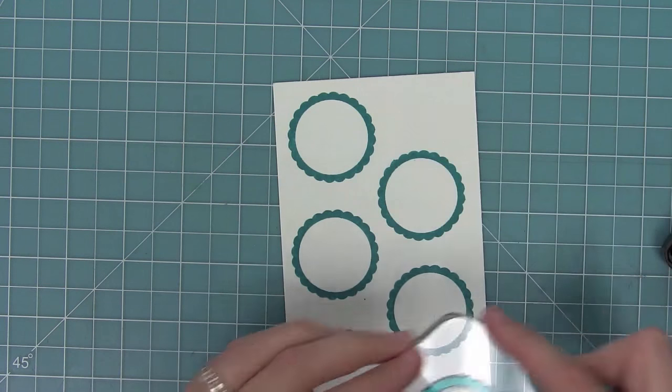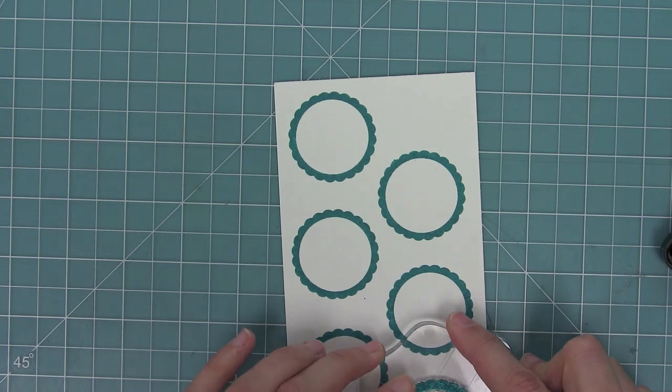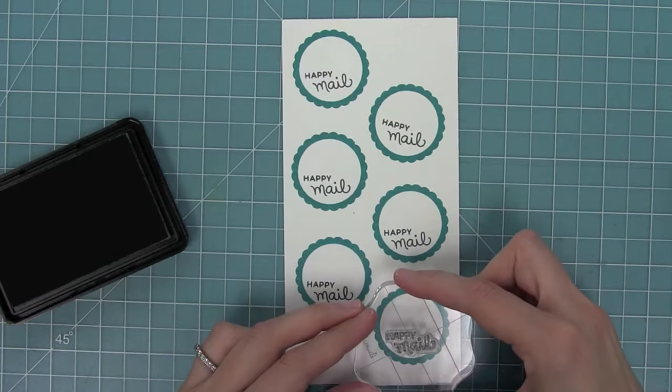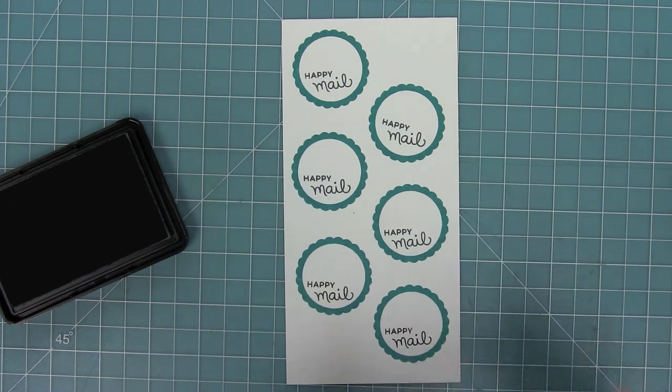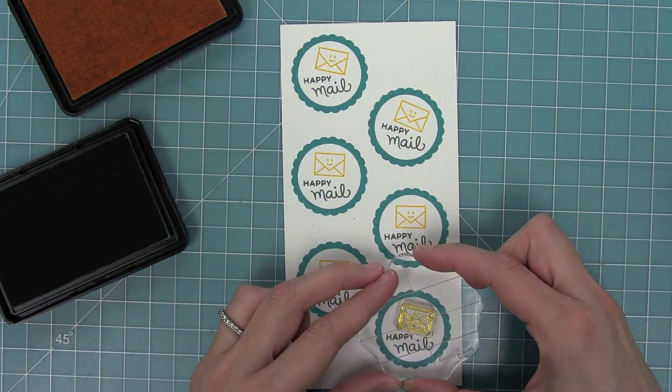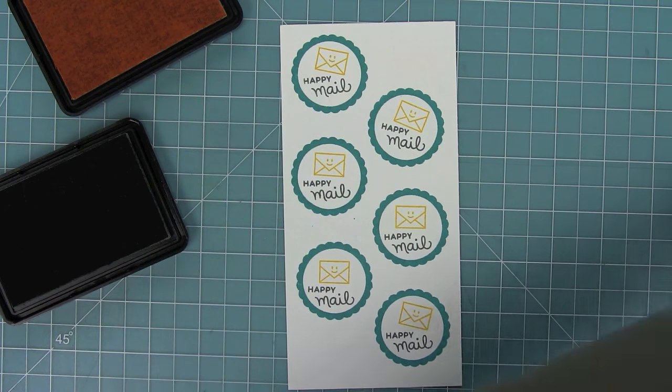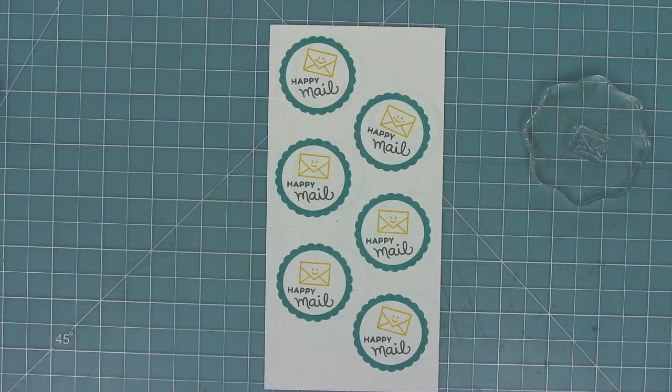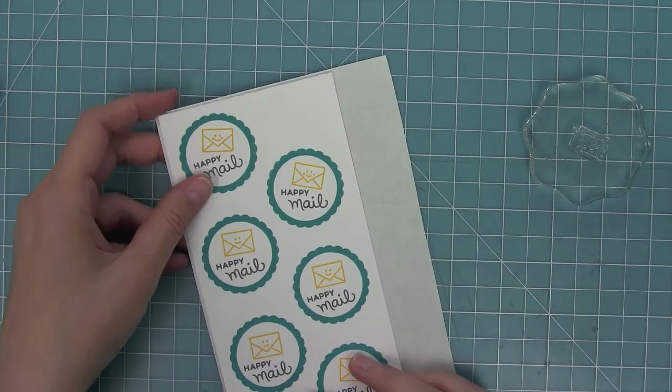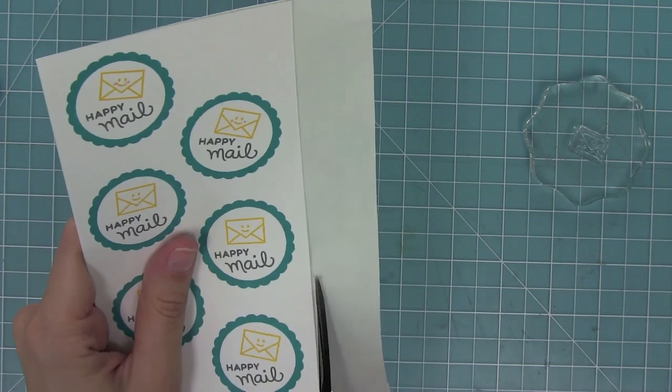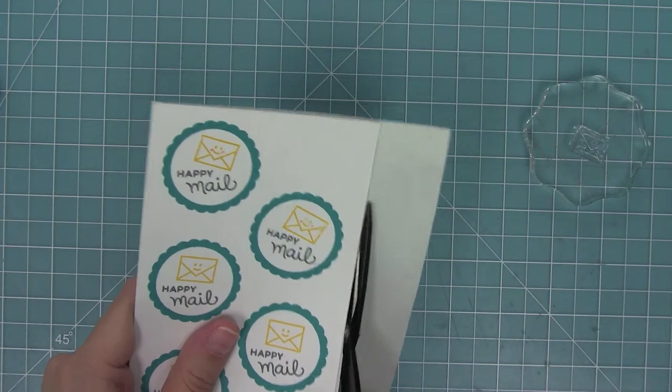Now I've always wanted some stickers to seal my envelope, so I'm going to create some right now. I'm stamping the Just For You label in Peacock ink, the Happy Mail there in Hippo ink, and then in Sunflower ink, that cute little envelope. And now I'm going to take some Stick It, which is a product that has sticky on both sides with some liner paper on it.